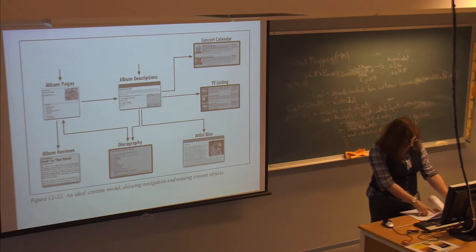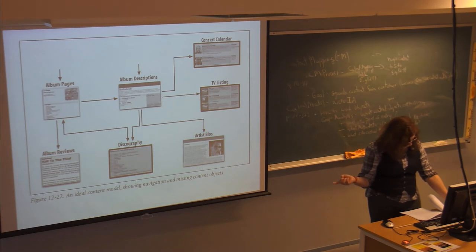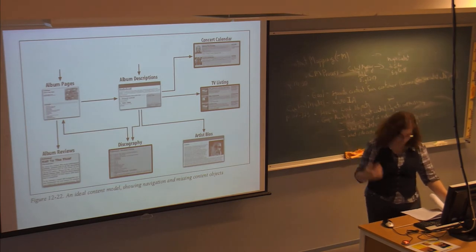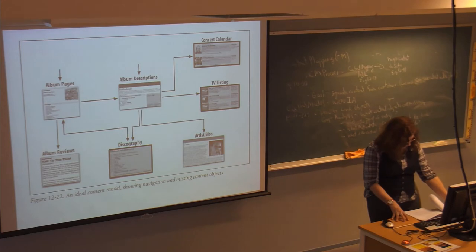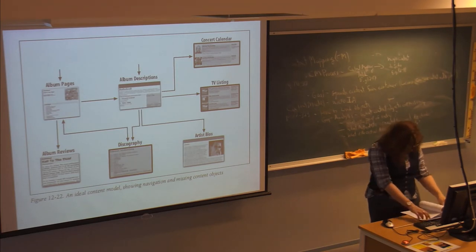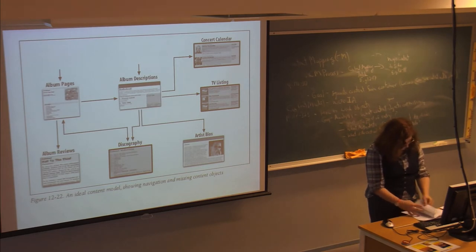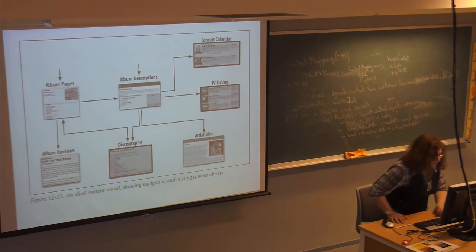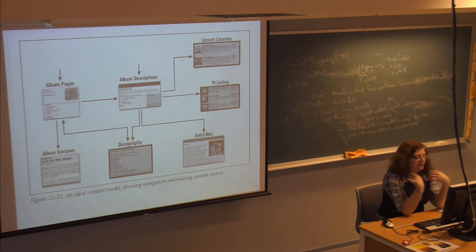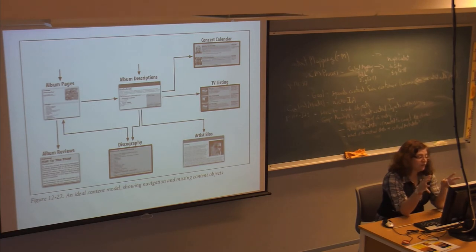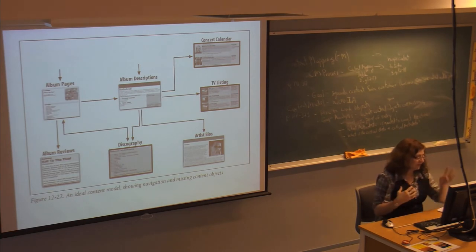The content object — the album page — connects to other content objects like the album review, the discography, and the artist. The metadata needed to connect those would be the album name. You can apply this approach whether you're redesigning a page or creating a new one: determine what main information is needed and how to identify links between pages.